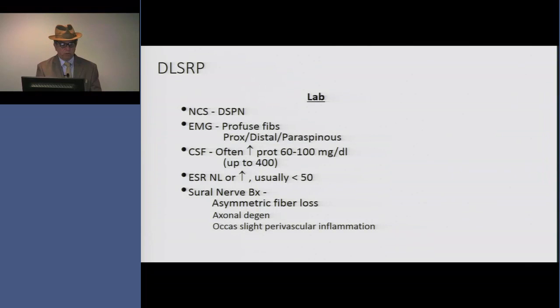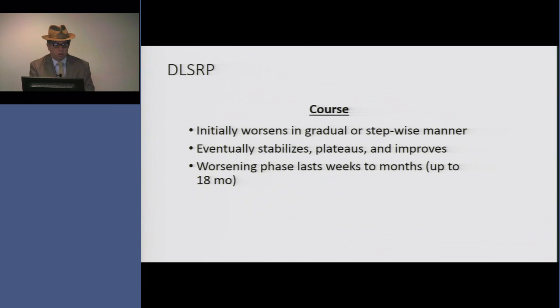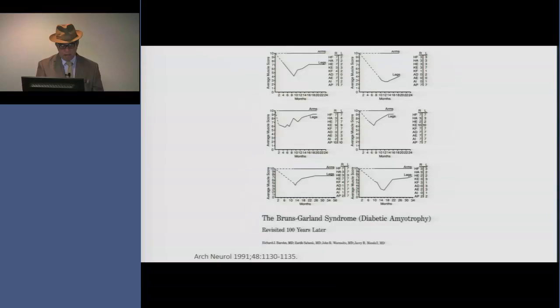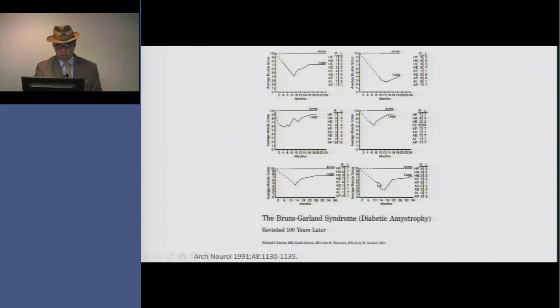We used to do nerve biopsies in this disorder. When we did, we showed asymmetric fiber loss and sometimes subtle perivascular inflammation, but I've always thought that was an epiphenomenon. The course usually worsens in a gradual or stepwise manner over weeks and sometimes months, then eventually stabilizes and plateaus, and ultimately slowly improves. The worsening phase in severe cases can be up to 18 months. This is a graphic from a paper I published with the Ohio State Group when I was a fellow, where we described about 16 cases of severe diabetic lumbosacral radiculoplexopathy. Some progressed for many months before turning the corner — the bottom row in the graphs shows leg strength, and the top row shows arm strength, which was normal.